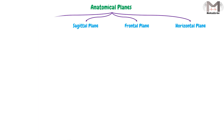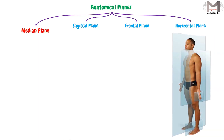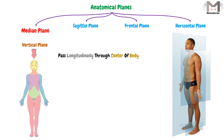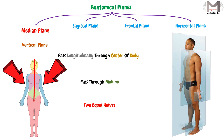Regarding the first plane, which is the median plane: this plane is a vertical plane that passes longitudinally through the center of the body. That means this plane will pass through the midline of the head, neck, and trunk. So it will divide the body into two equal halves — a right half and a left half — because the plane passes through the midline of the body.